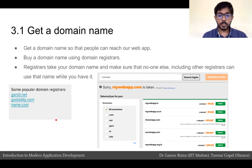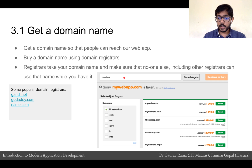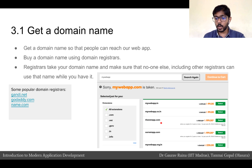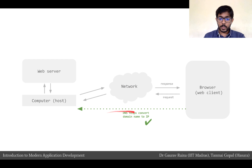Let's look at the first step: buying a domain name. We typically buy domain names from domain registrars. Registrars take our domain name and ensure that no one else, including other registrars, can use that name while we have it. For example, searching for 'my web app' in a registrar's console might show that mywebapp.com is already taken, and suggest alternatives like mywebapp.in or mywebapp.co.in. Some popular domain registrars today are Gandhi.net, GoDaddy, and Name.